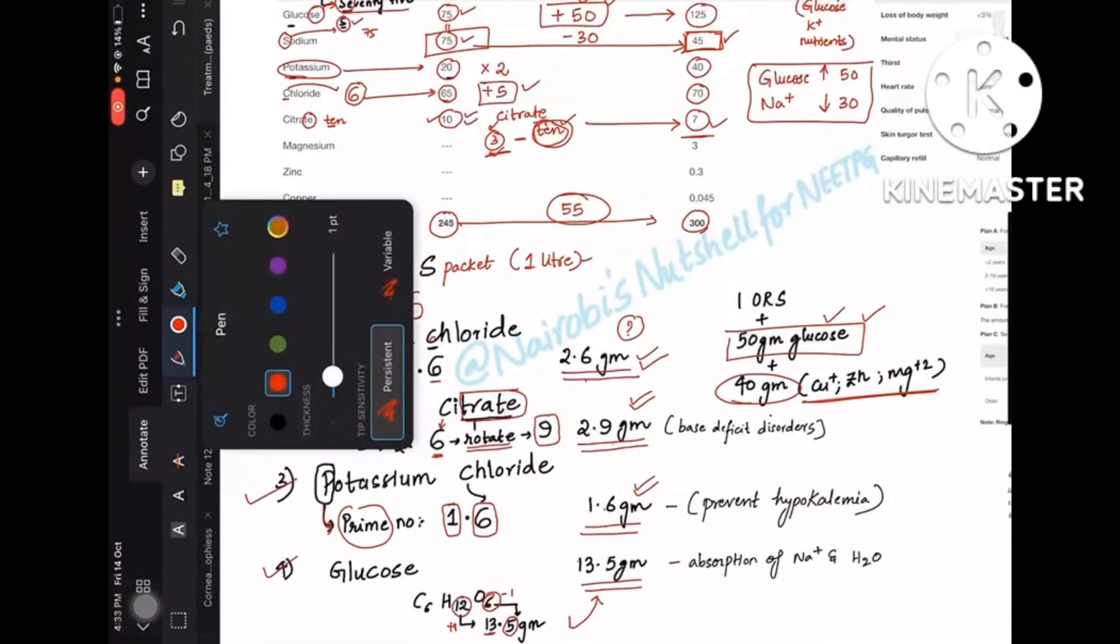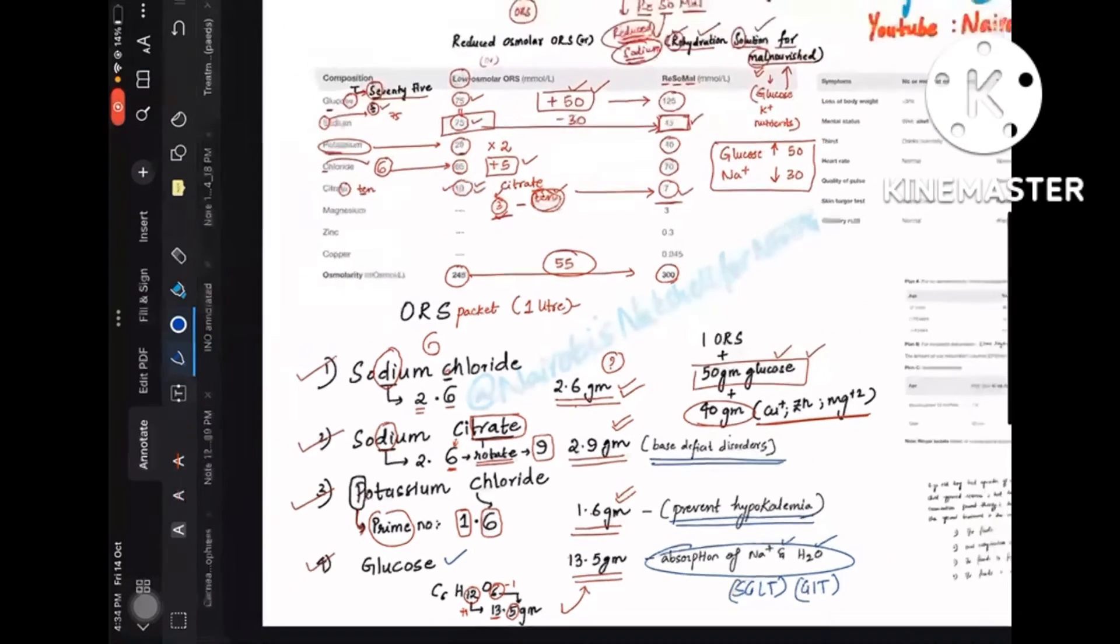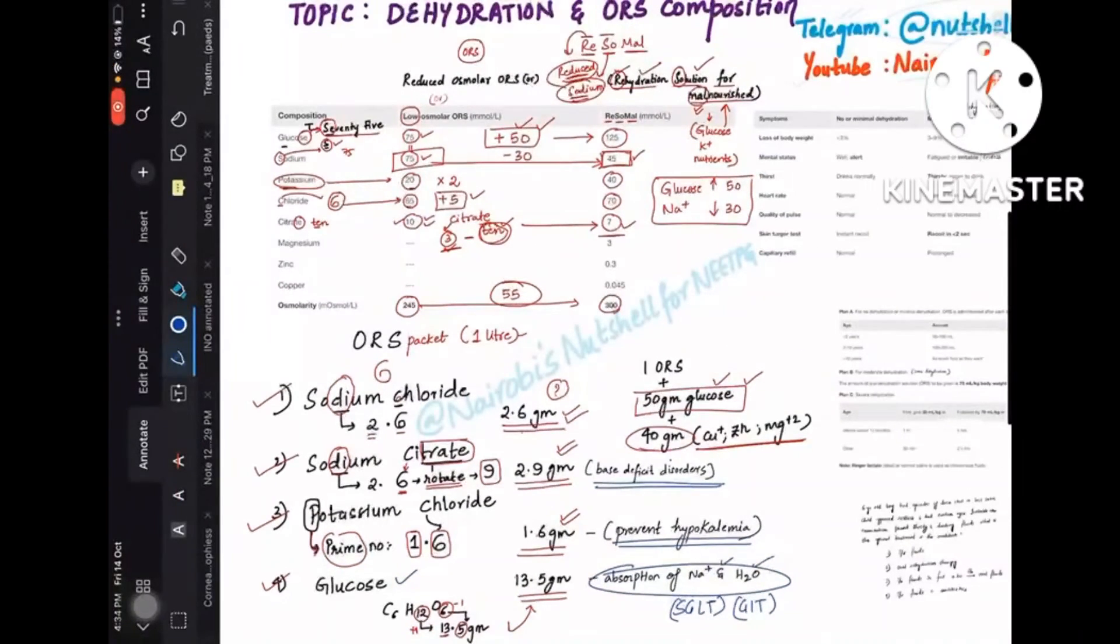Now here are a few conceptual points: Why do we use sodium citrate? It is to correct the base deficit disorders. And the potassium chloride is to prevent the hypokalemia in the malnourished kids. And glucose is for the absorption of sodium and water. So we have this sodium glucose channels in the GIT. Sodium dependent glucose—so absorption of sodium, water, and glucose occurs together. So that's why we give in ORS packets. This is the difference between ReSoMal and low osmolar ORS, which is otherwise called reduced osmolar ORS.